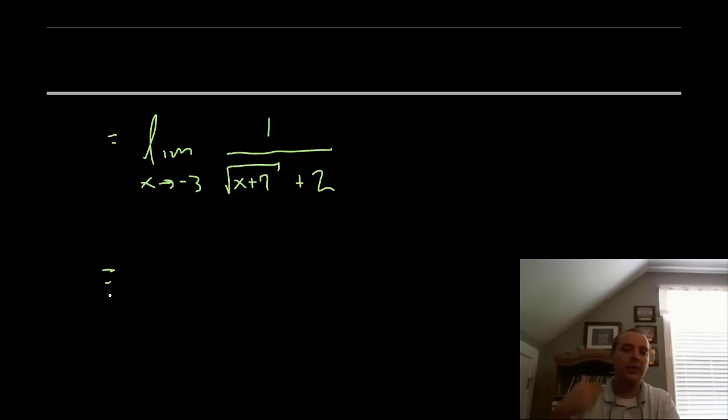Let's try to take that limit again. We'll take negative 3, we'll plug it in for x, and as long as we get an acceptable value, I think this is a continuous function at negative 3. I would get 1 over the square root of 4, which is 2, plus 2. That makes a fourth.